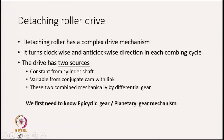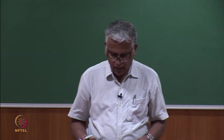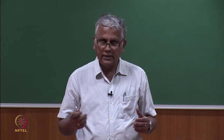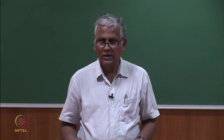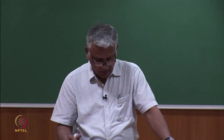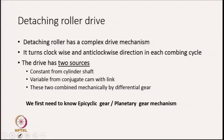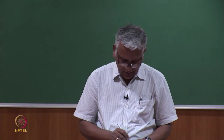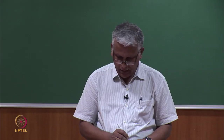To generate this kind of motion mechanically, machine manufacturers use two drive sources: a constant drive from the cylinder shaft and a variable drive from a conjugate cam with link mechanism. These two rotations are mechanically combined or integrated by a differential gear. The purpose of the differential gear is to add or subtract two motions and produce a resultant output motion. To understand this, we first need to know what epicyclic or planetary gear mechanism is — both terms mean the same thing.